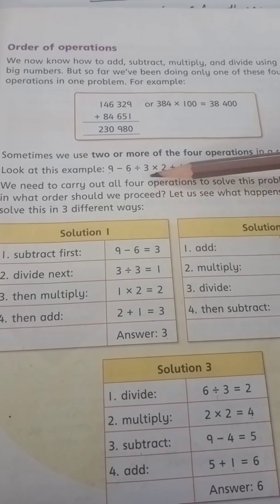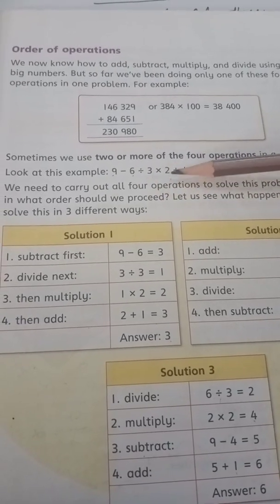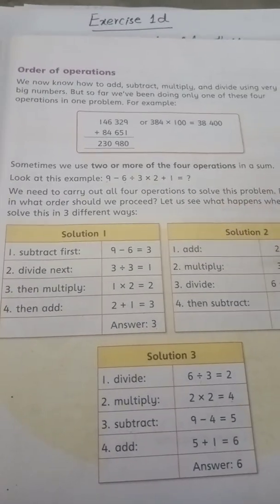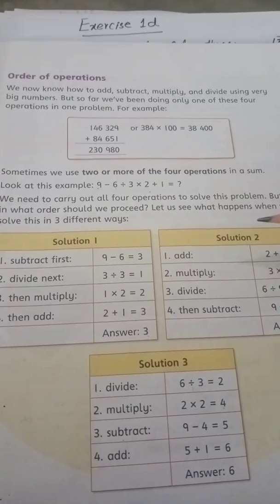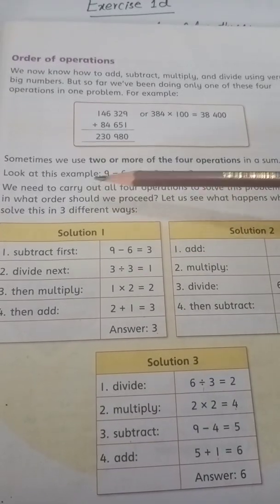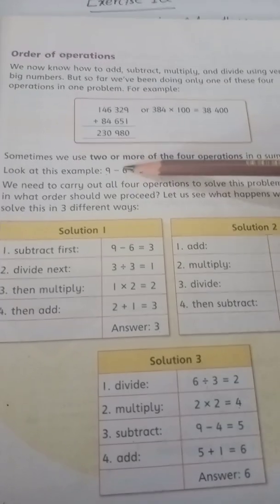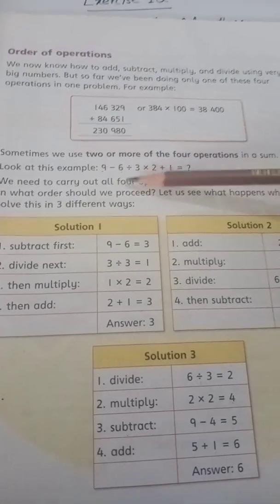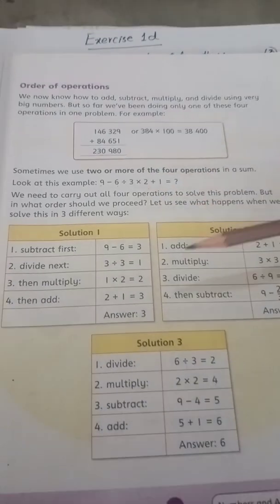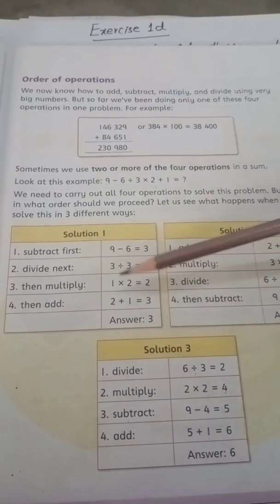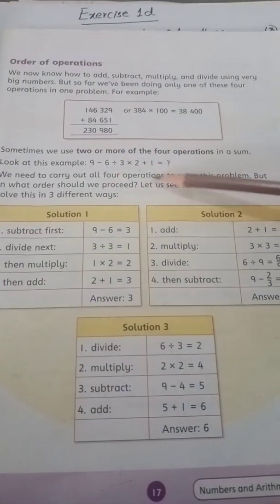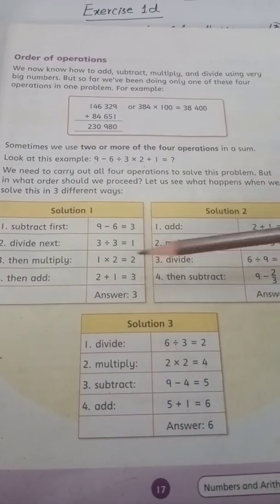9 minus 6 divided by 3 multiplied by 2 plus 1 is equal to what? We need to carry out all four operations to solve this problem. But in what order should we proceed? Let us see what happens when we solve this in three different ways. Students, this is a sum and it has three different solutions.